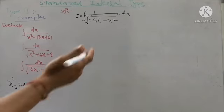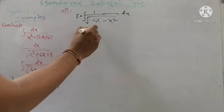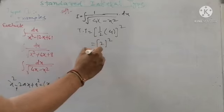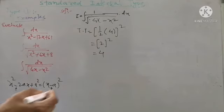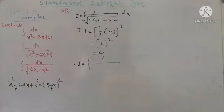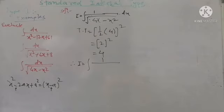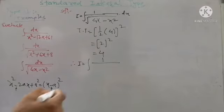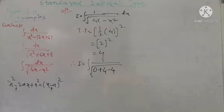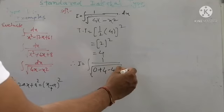Using the third term formula: (1/2 × coefficient of x)² = (4/2)² = 2² = 4. So the third term is 4. We adjust this in the integration. Since there is no constant, it is 0. We write the denominator as 0 + 4 - 4 + 4x - x², so: 4 - (x² - 4x + 4).